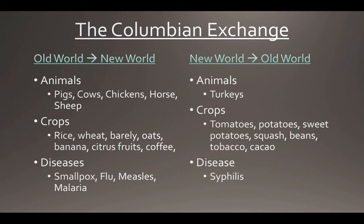Disease would be a serious problem plaguing Native Americans all the way until the end of the Indian Wars at the end of the 1800s. Going from the New World to the Old World: animals included turkeys, llamas, and alpacas from South America. Big crops included tomatoes, potatoes, sweet potatoes, squash, beans, tobacco, and cocoa — which led to chocolate. These were really important for fueling a major influx into the European diet. There were also some diseases going the other way, one big one being syphilis.